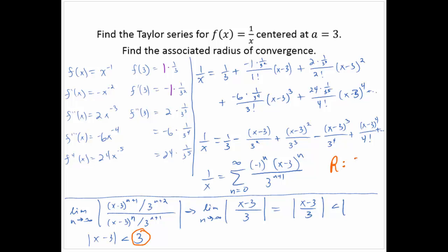If we also want the interval of convergence: centered at 3 with radius 3, the interval runs from 0 to 6. We'd need to check the endpoint x = 6. We know the series won't converge at x = 0 since the function is undefined there, so we should check x = 6.